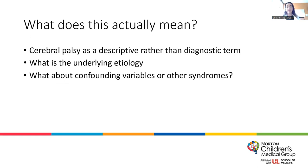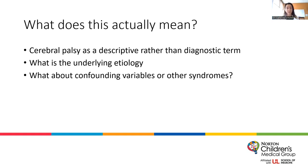This brings up an interesting discussion because everyone has an idea of what a CP diagnosis looks like. From my experience, that word brings up catastrophic images for a lot of my patients' families, and that is not always the case. Cerebral palsy is a descriptive term — it's not a diagnostic term. We also need to think about the underlying etiology and whether there are other confounding variables or syndromes contributing to the clinical picture. This leads into cerebral palsy mimickers, which has really been a new discussion in the last five years.